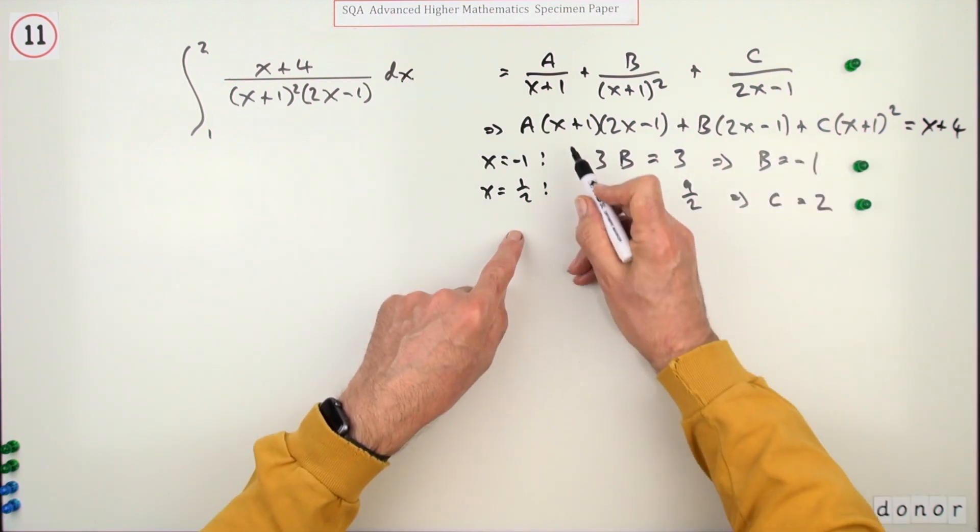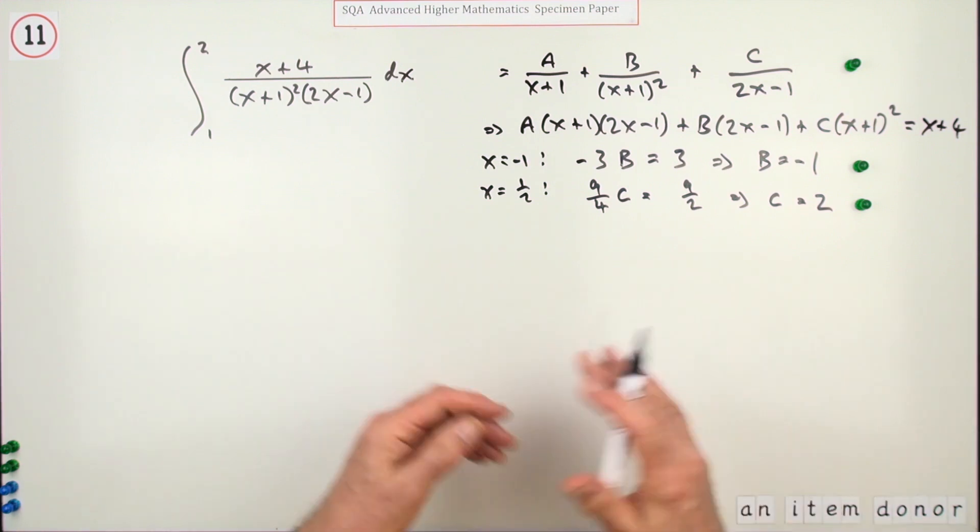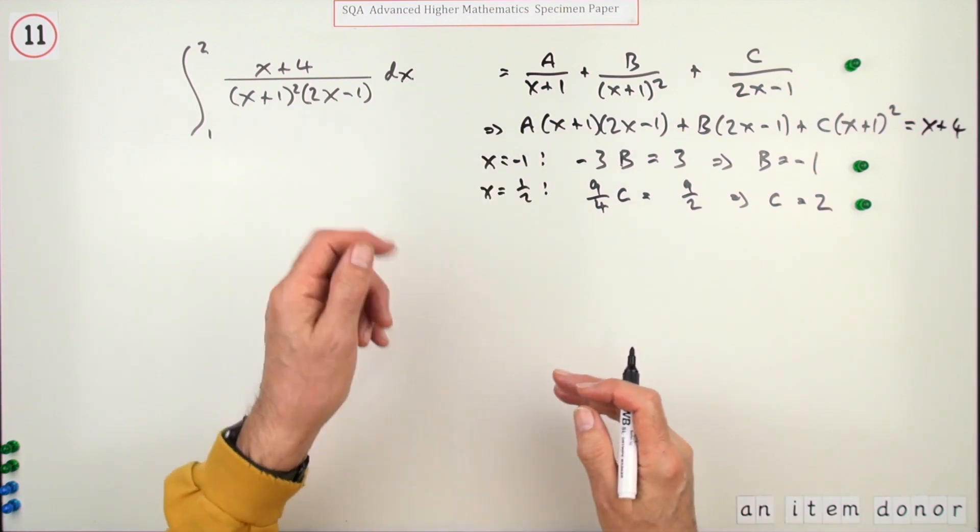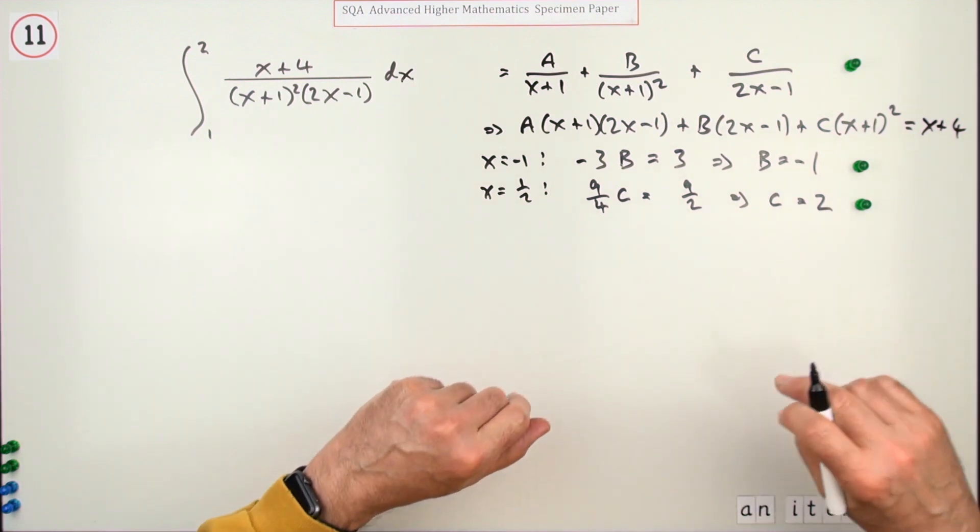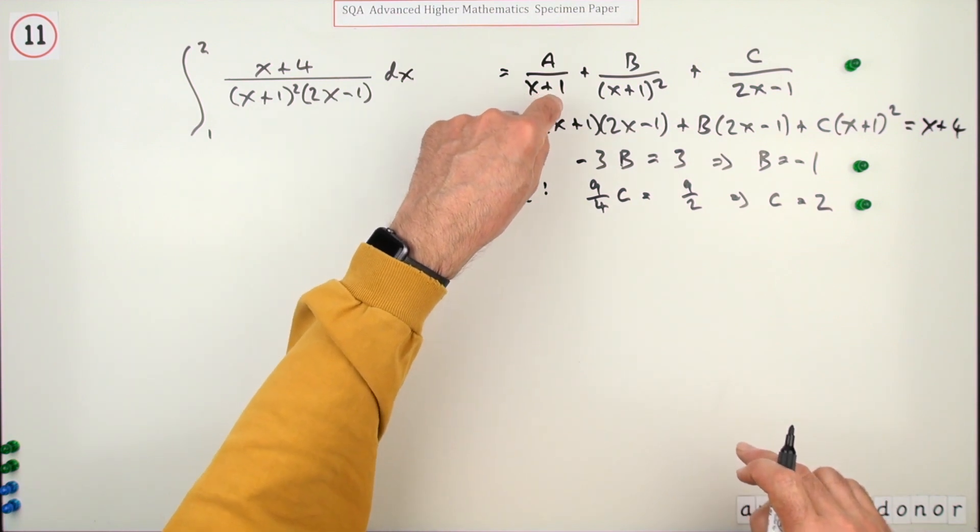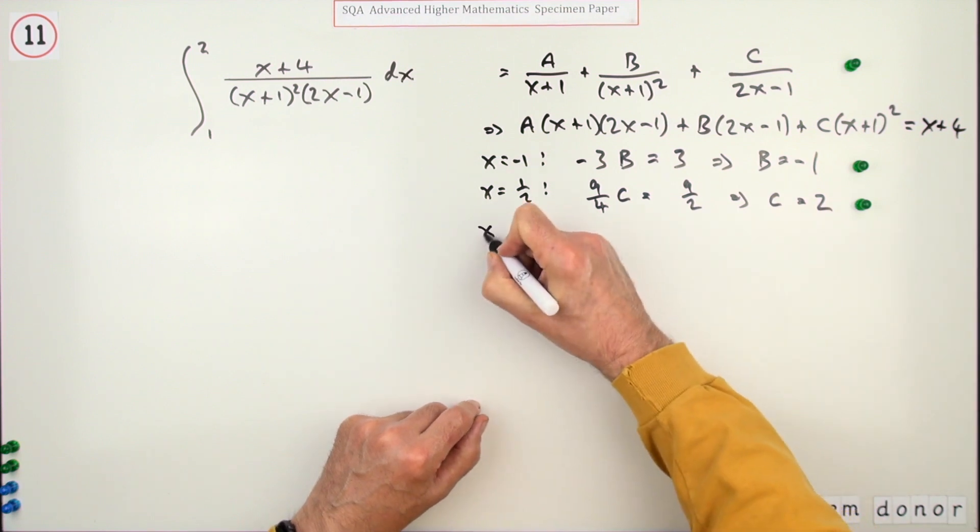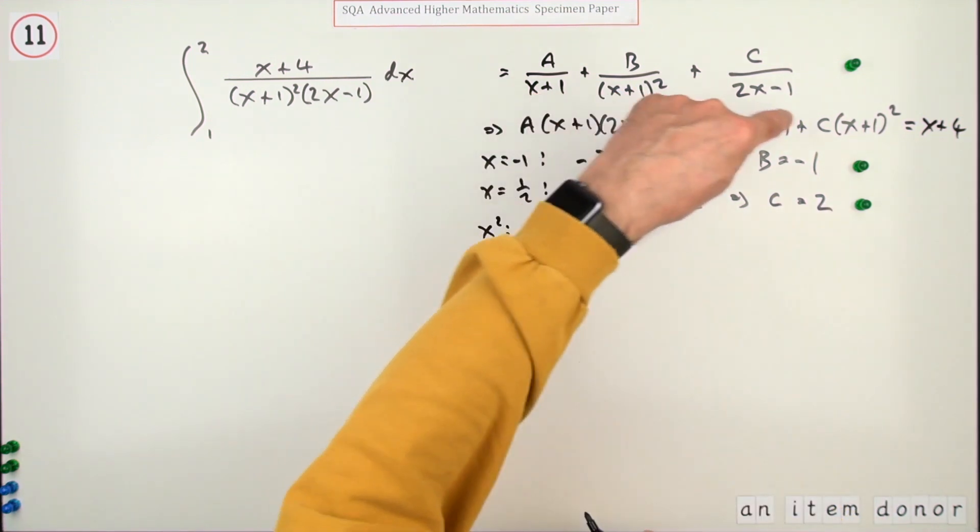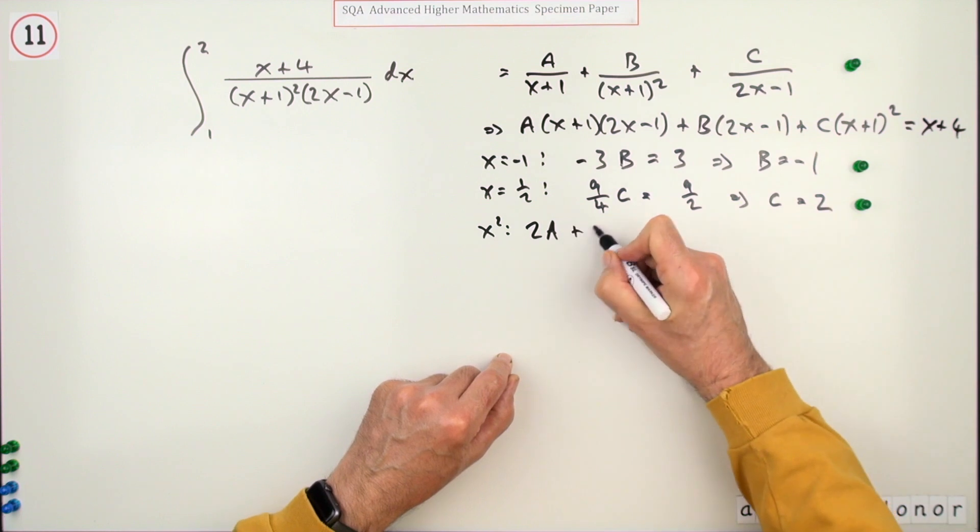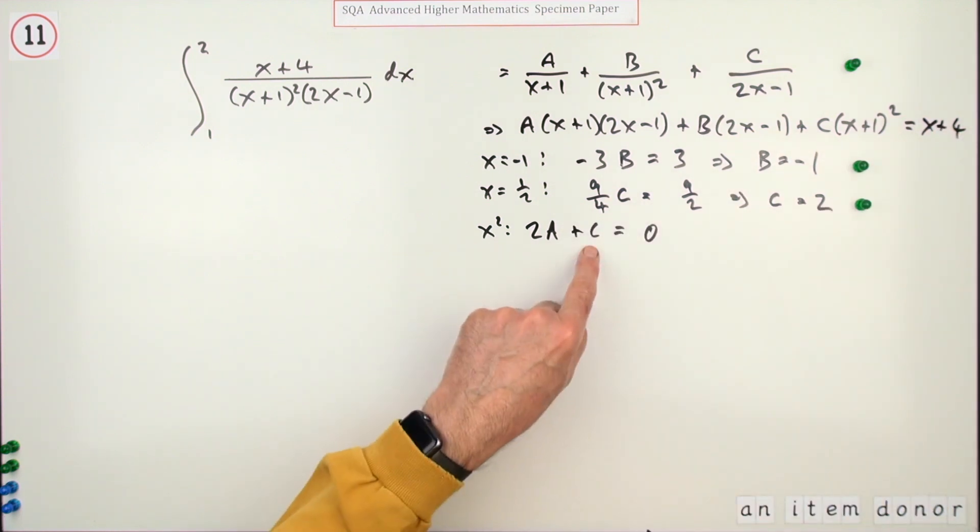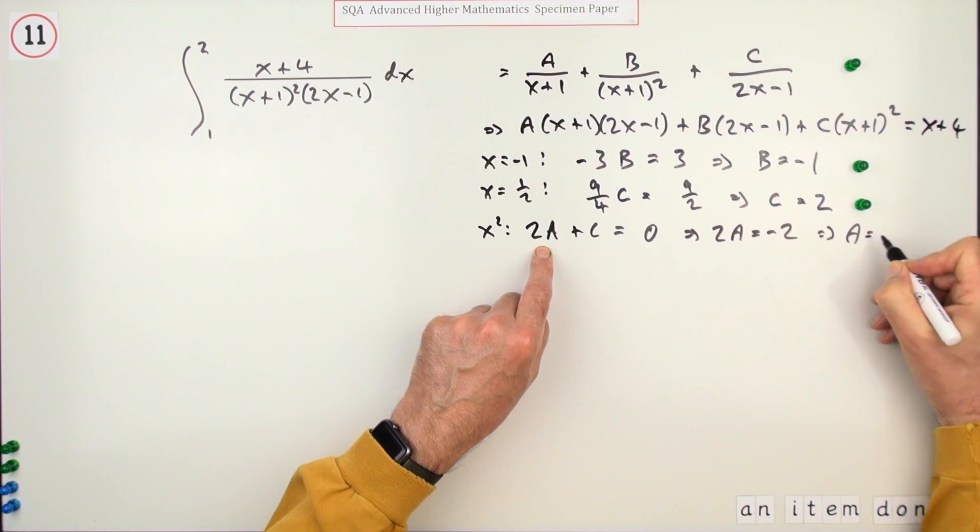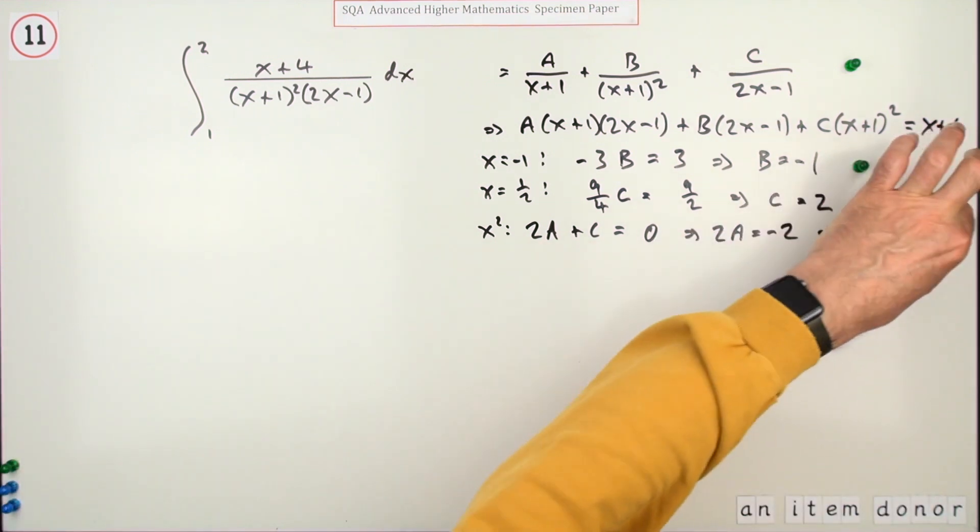There's no more knockout values, so a more sophisticated technique would be to compare both sides. Compare the x² terms: on this side I've got 2A for x², and that's got none and that's got one. So 2A+C should equal zero. You know C is 2, so that means 2A=-2, or A=-1. And that's the third mark.